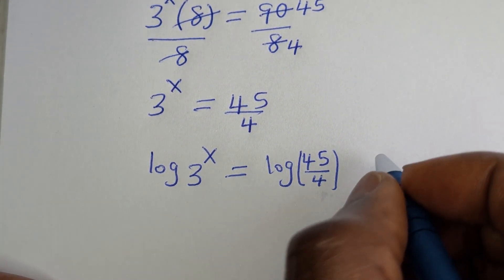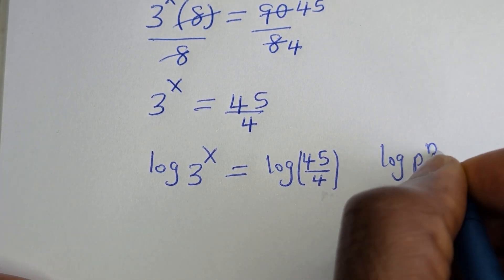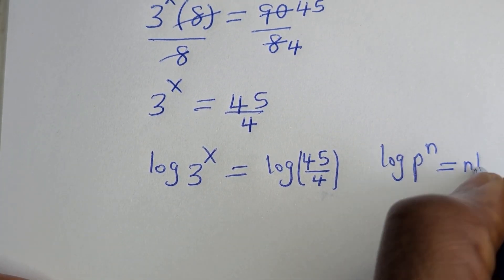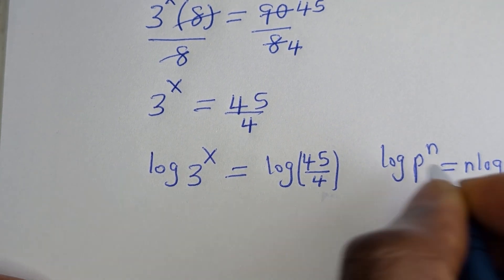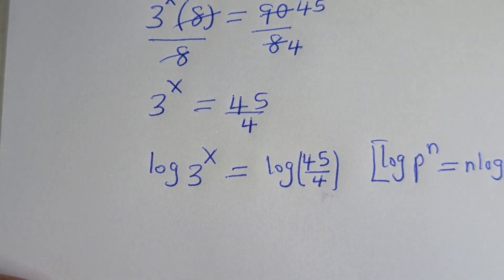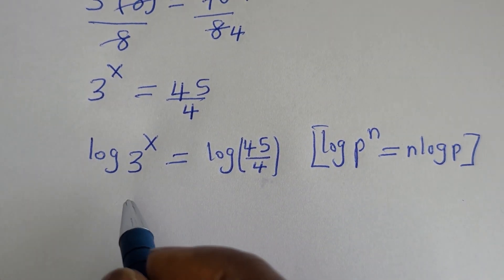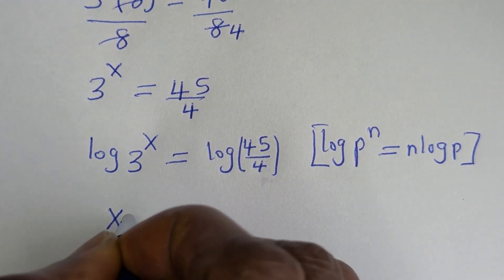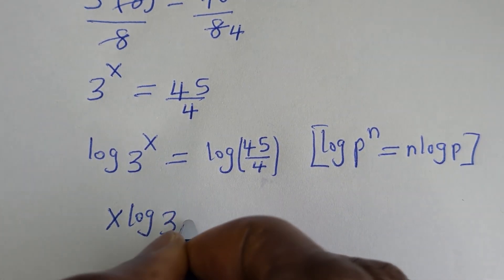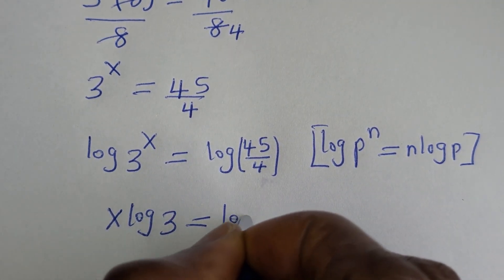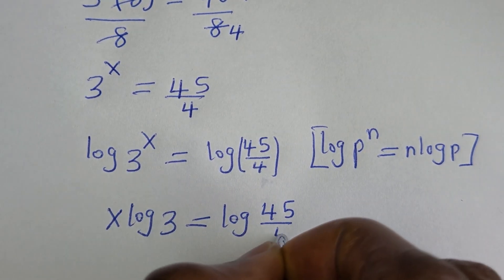If you have log P raised to power N, this is equal to N log P. Then this can be written as S log 3 is equal to log 45 over 4.